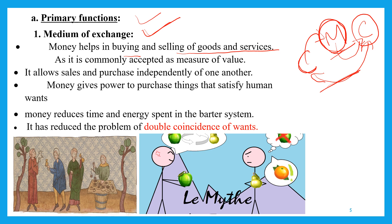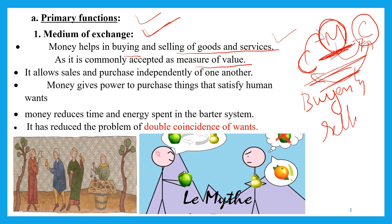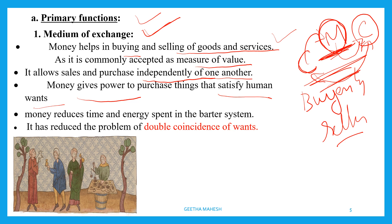Money is commonly accepted as a measure of value, so you can easily exchange goods for money and with money buy goods. As money comes in between two commodities, it separates buyers and sellers, meaning the seller and buyer can do their activities independently without needing to depend on each other. Money gives the power to purchase things that satisfy human wants, because it is generally accepted and has purchasing power.